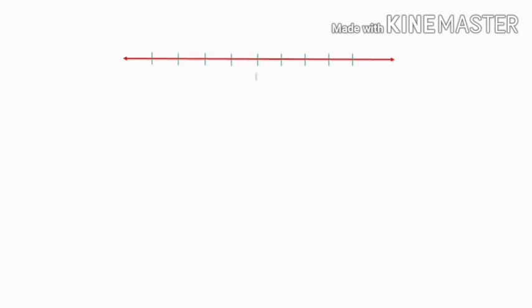Now we have learned about natural numbers or counting numbers — that includes 1, 2, 3, 4, etc. Next, we have learned whole numbers, which means we included 0 with natural numbers to get 0, 1, 2, 3, etc. Next, integers — negative numbers, 0, and positive numbers. Let's represent these integers on a number line. First, we draw a line, divide it into different portions, label the middle portion as 0, mark positive numbers on the right of 0, and label negative numbers on the left of 0.